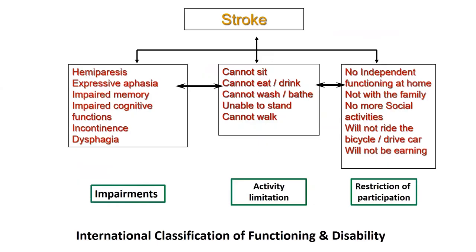Taking stroke as an example, the impairments include hemiparesis, expressive or receptive or global aphasia, impaired memory, impaired cognitive functions, incontinence, and dysphagia. The activity limitations may be inability to sit, eat, drink, wash, bathe, stand, or walk.